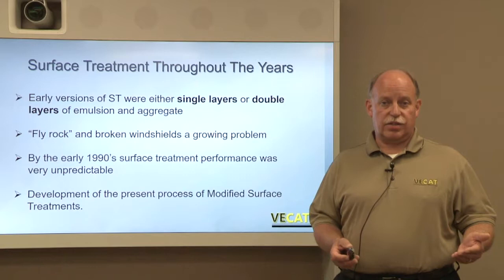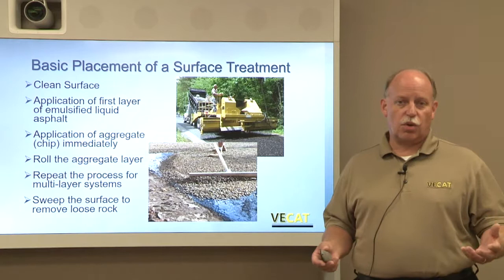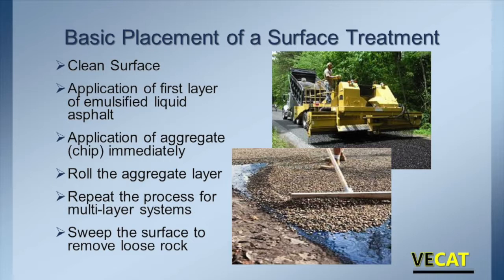That's when the more modern, what we call modified surface treatments began. Before getting into the details of what a modified surface treatment looks like, let's talk briefly about the basic placement of a surface treatment. A clean surface is needed to apply that liquid asphalt — you can't apply it to an extremely dirty surface or it won't bond. So you've got to clean off the dirt, debris, soil, or clay particles with a broom — either a power broom attached to a tractor or something like a bobcat — to make it clean so that liquid asphalt will actually bond to that surface.